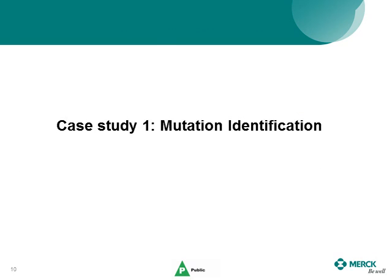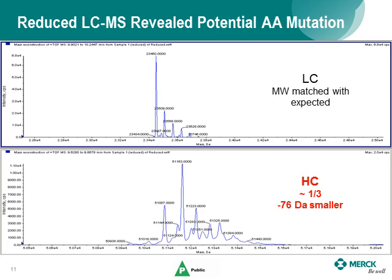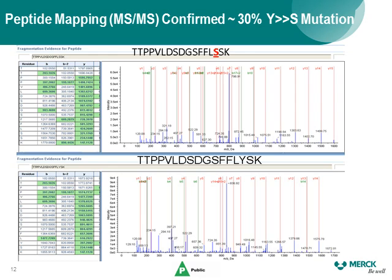In the first example, I will show how mass spec helps identify a mutation in a monoclonal antibody. The deconvolution mass spectrum of the reduced antibody shows the light chain mass matched well with the calculated value. However, for the heavy chain, about one-third of the molecules was 76 Da smaller than the theoretical value from the sequence, indicating a possible mutation. We then examined the peptide mapping data and were able to locate a peptide containing a threonine-to-serine mutation. Based on the peak area of the mutated peptide, the percentage was about 30% of the total.